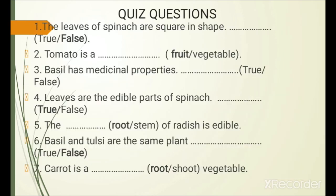We will move on to exercises. First quiz question: The leaves of spinach are square in shape — true or false? Answer is false. Second question: Tomato is a blank — fruit or vegetable? Tomato is a fruit.